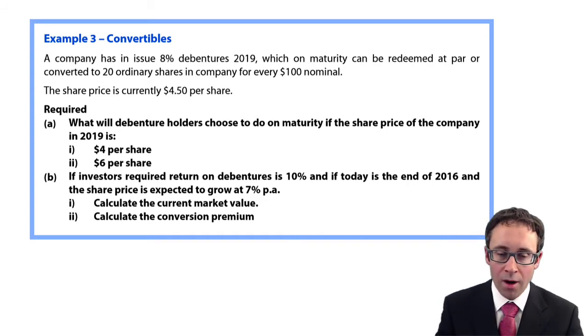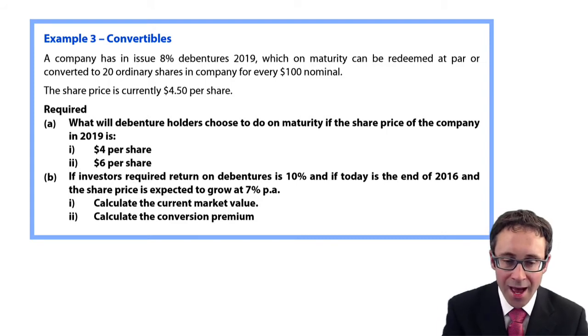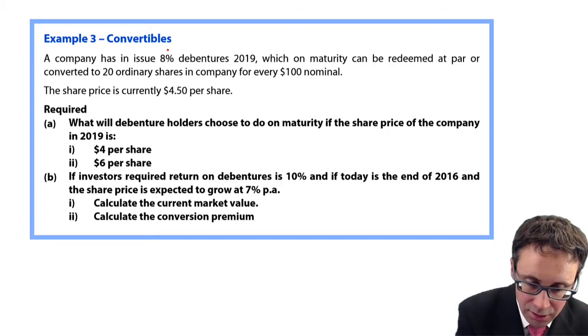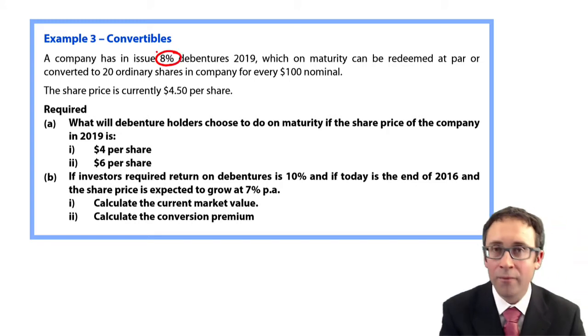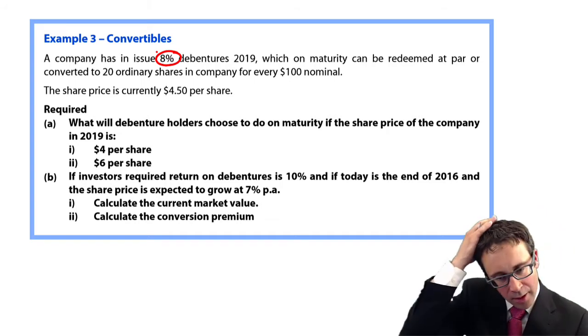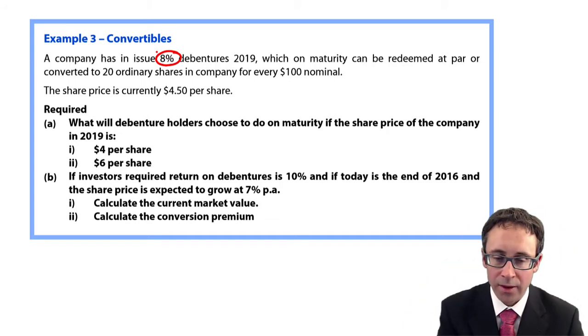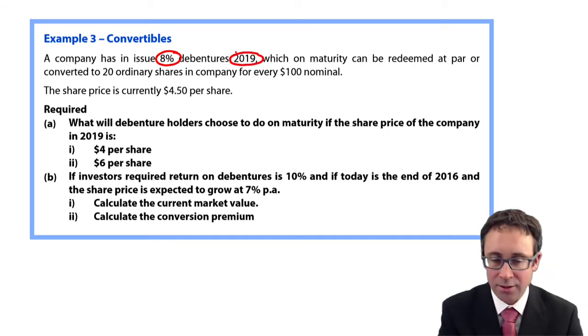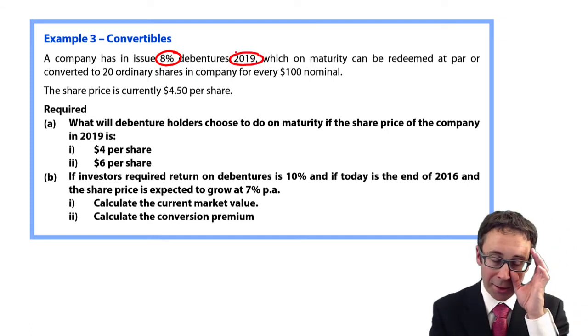So how does it all link in? If we look at the information, the question says that a company has in issue 8% debentures. So that is the coupon rate, so we'll be paying $8 per $100 nominal. 2019, so they are redeemable in 2019.